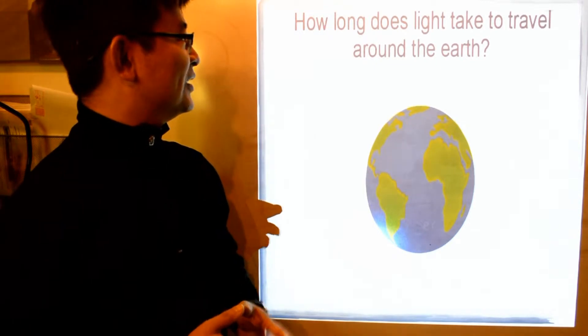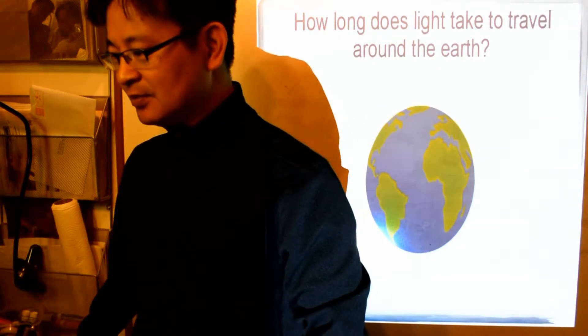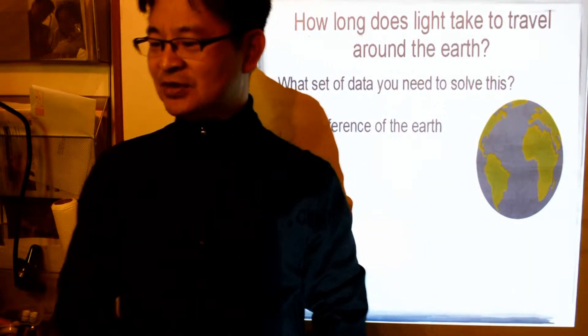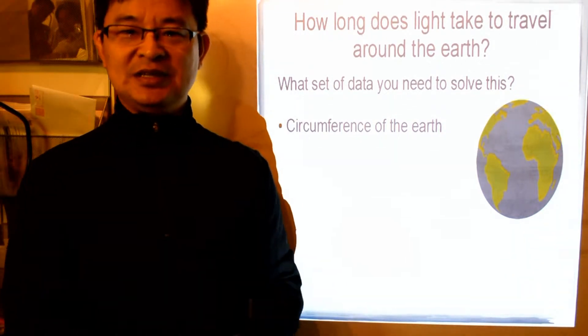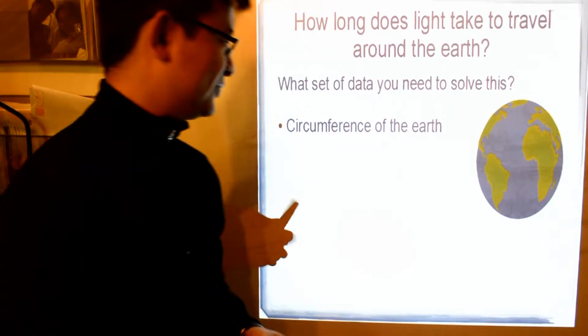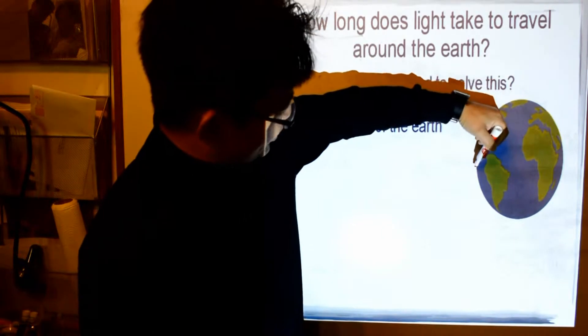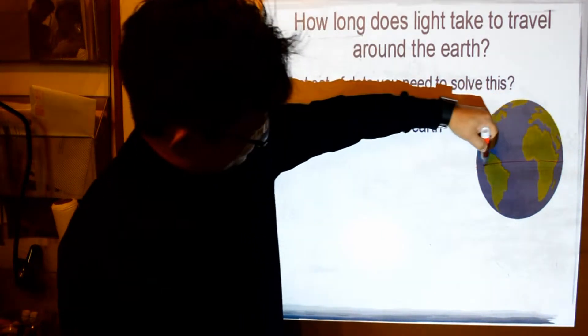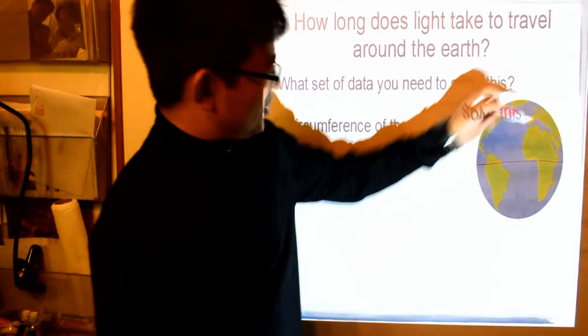Okay, so how do we solve this question? We need a set of data. The first thing we need is the circumference of a circle. In this case we're talking about the earth. So this earth is relatively spherical and we can assume we start at the equator because this has the largest circumference of a sphere.